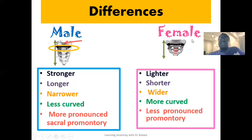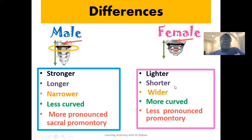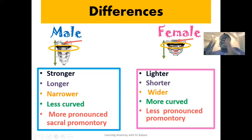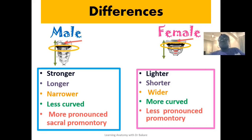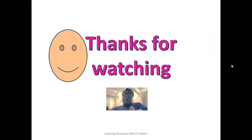In the female sacrum, the sacral promontory is less pronounced in order to increase the capacity of the pelvic inlet or the pelvic brim. The orientation of the pelvic brim is highlighted here in yellow, and because the promontory is less prominent it does not encroach into the space, thereby creating more space around the pelvic inlet. More space in this region allows for easy passage of the head of the baby during vaginal birth. All the characteristics presented by the sacrum in the female are to support the vaginal birth process. Thanks for watching.